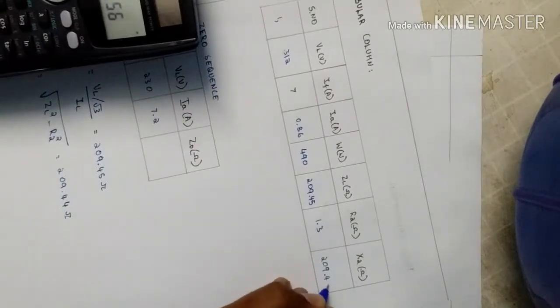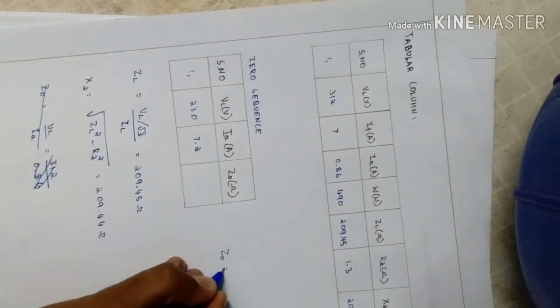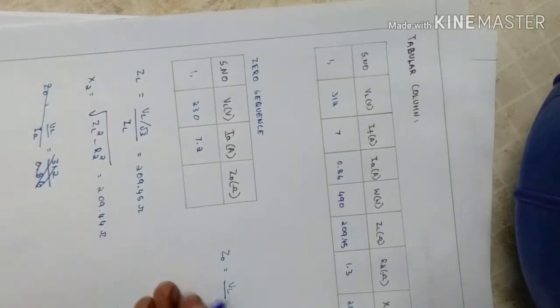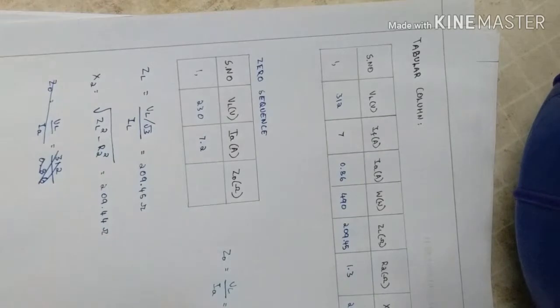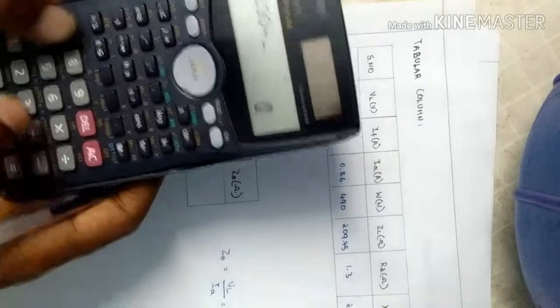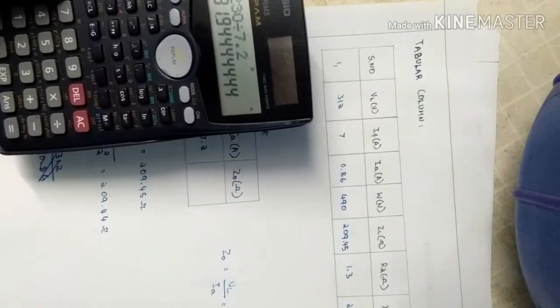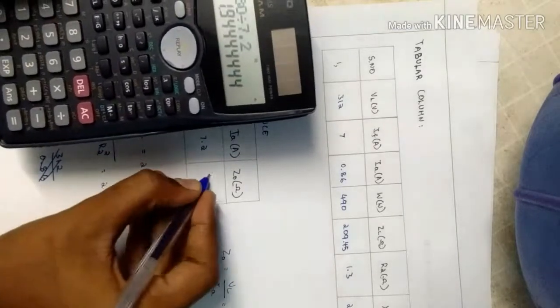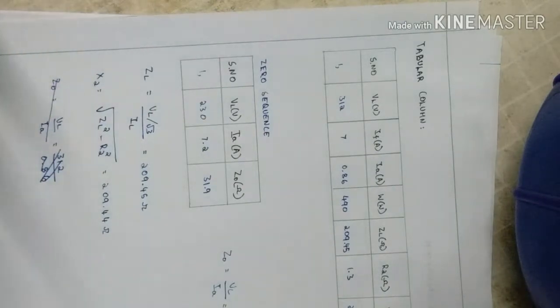For Z naught the formula will be VL by IA. VL is 230 volt by IA is 7.2 ampere. 230 volt divided by 7.2 gives 31.9. Let's say experiment is over.